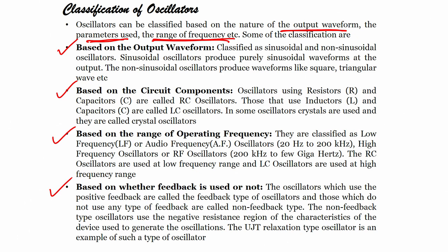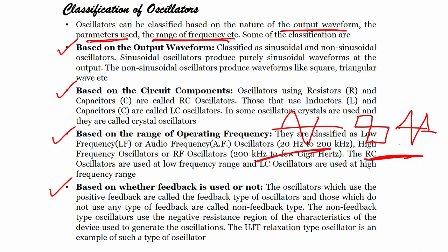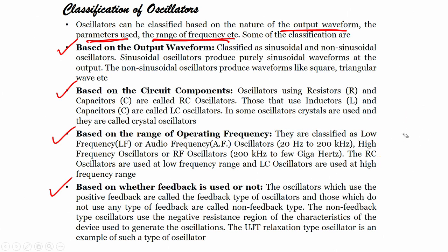Based on output waveform, oscillators are classified as sinusoidal and non-sinusoidal. Either it will give a sine wave at the output, or it will give a square wave, a triangular wave, or any other wave which is not a sine wave. Sinusoidal oscillators produce purely sinusoidal waveforms; non-sinusoidal oscillators produce square, triangular waves, etc.